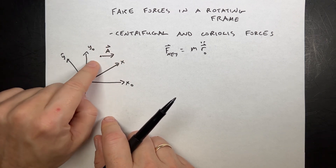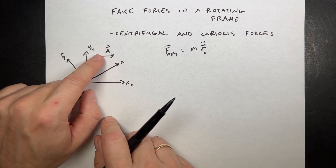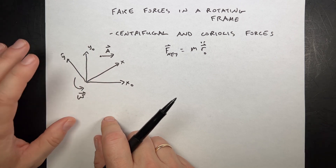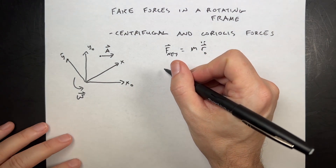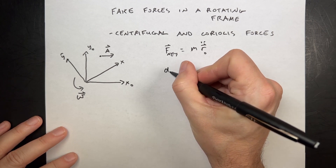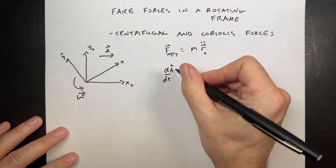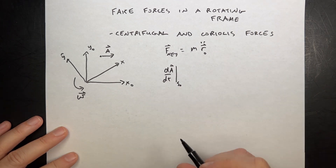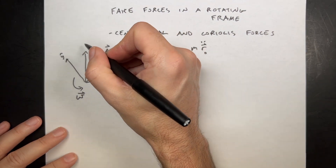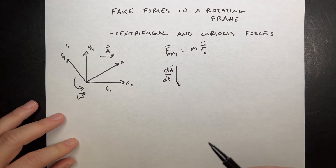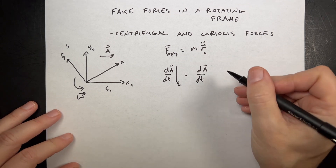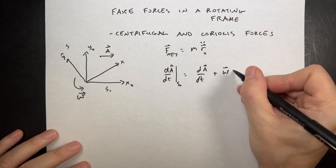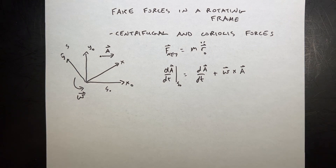If I have a vector in that reference frame, I care about finding the derivatives of the vector. I'm not going to derive this because I don't like the derivation. It looks like this: the derivative of vector A with respect to time in the S-zero frame equals the derivative of A in the rotating frame, plus omega cross A. Omega tells you how that frame is rotating — it's kind of a big deal.